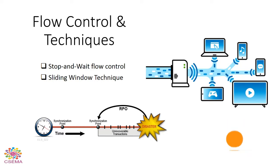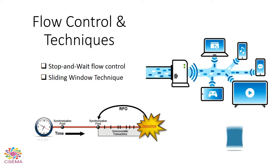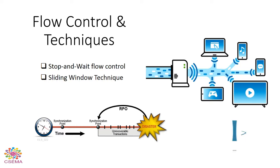There are two kinds of techniques used to control the data flow: the first is Stop and Wait flow control, and the second one is the Sliding Window technique, used by the data link layer. Let's start with more detailed descriptions about these techniques and learn more about what flow control is.